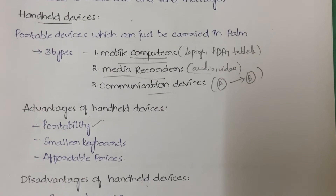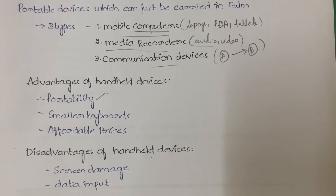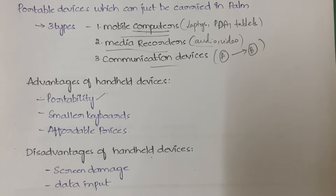Anything will have advantages and disadvantages. The first disadvantage is screen damage — you must handle handheld devices very carefully. For example, if you're in a hilly area taking a photo and you drop your mobile phone, the screen — and possibly the entire phone — will get damaged.